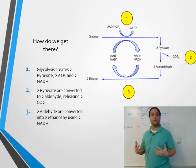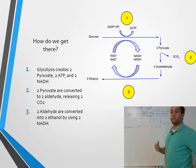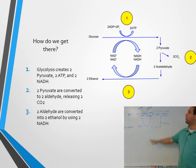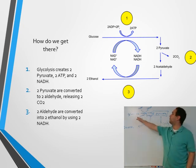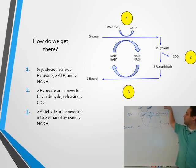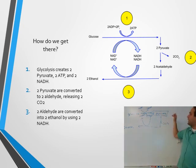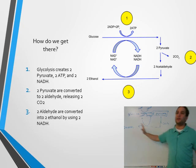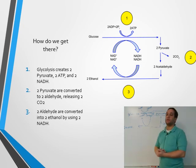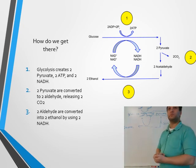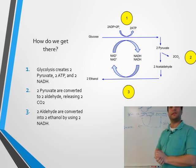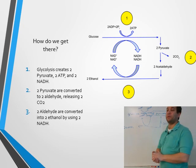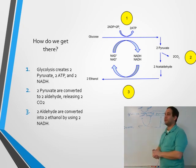We produced ethanol - we got there through breaking down glucose to pyruvate, then that pyruvate breaks down into the waste product of ethanol. This seems a lot easier than aerobic cellular respiration, right?